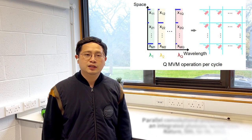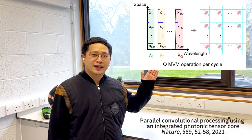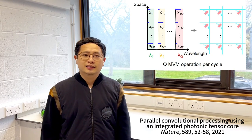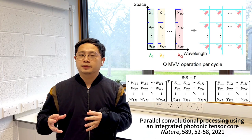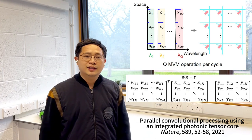In our previous work, we have shown that by using wavelength division multiplexing, you can parallelize matrix-vector multiplication. That gives you one matrix-matrix multiplication. And in this work...